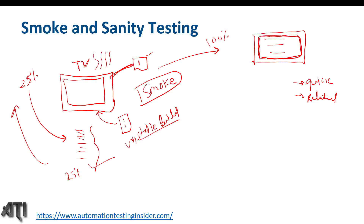We will also test related functionalities of the TV — like after switching it on, whether the screen is coming on properly, and whether color and voice are working properly. These are some test cases we execute as part of our testing. This is nothing but sanity testing. If new features have been implemented or any bug fixes are done, we go for quick testing of those bug fixes or new functionalities and related testing. That is sanity testing, and sanity testing is a subset of regression testing.